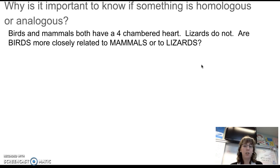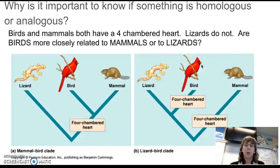Well, here's my question: birds and mammals both have four chambered hearts; lizards do not. So what are birds more closely related to, mammals or lizards? Well, according to these two cladograms, depending on where you put four chambered heart, it might seem that birds are more closely related to mammals, or birds are more closely related to lizards depending on where you put this four chambered heart. In this case, birds and mammals having a four chambered heart is homologous. In this case, birds and mammals having four chambered heart is analogous.